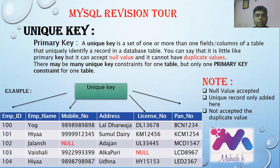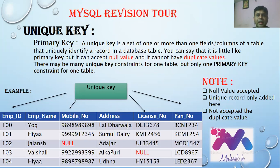In the example table with columns Employee ID, Employee Name, Mobile Number, Address, License Number, and PAN Number — Employee ID can act as a unique key since all records are uniquely identified. Mobile Number and License Number columns have null values, meaning they can also be considered unique key columns. Remember: null values are accepted under unique key, and duplicate values are not accepted.